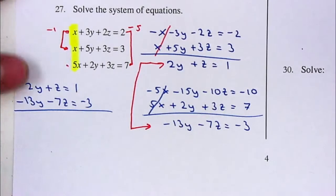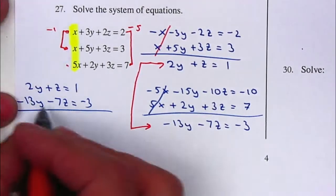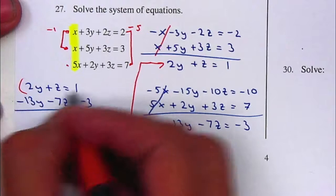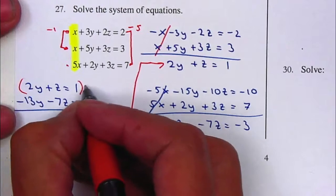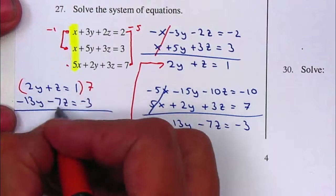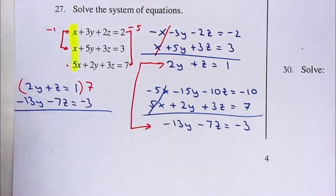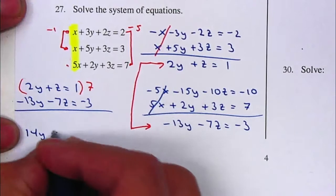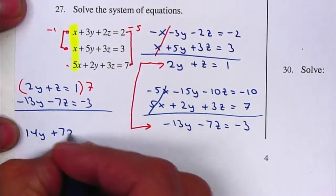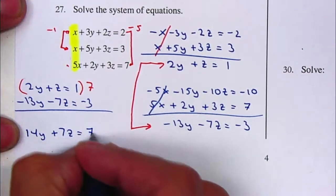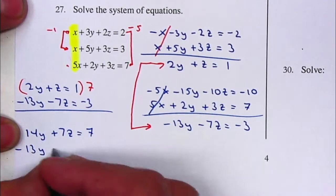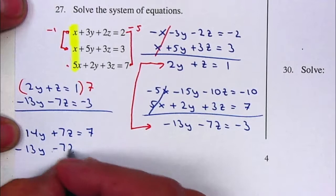I want to cancel the Y's or the Z's now. The Z's might be easier. Multiply the first equation by seven so the Z's cancel out. That gives me 14Y plus 7Z is equal to seven. The second equation stays exactly the same.